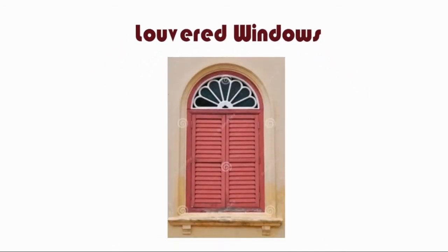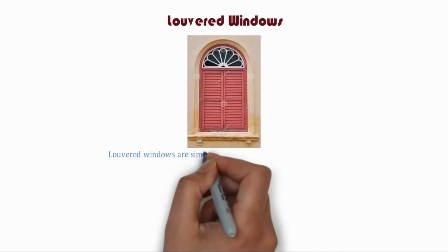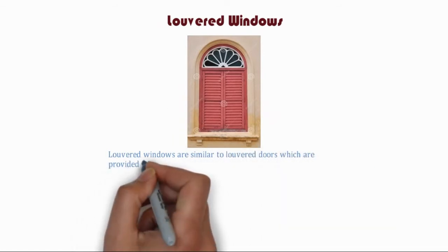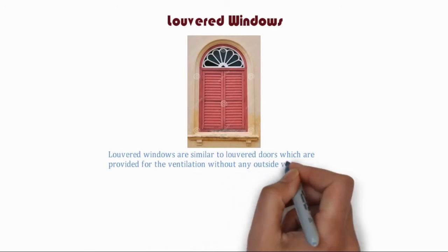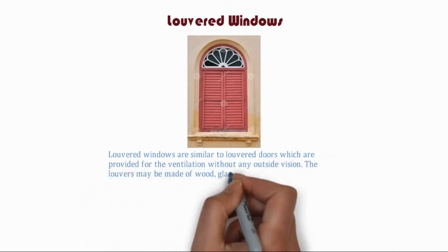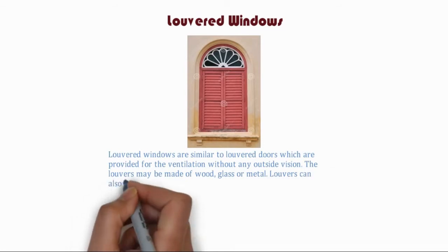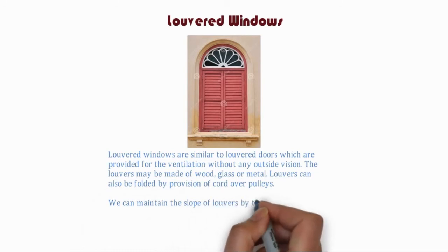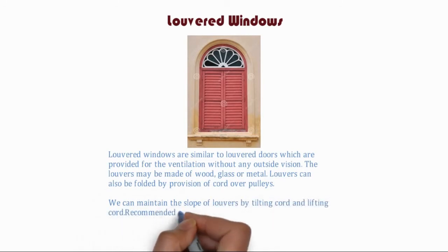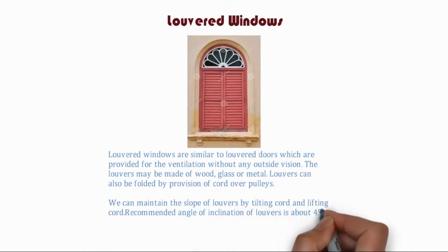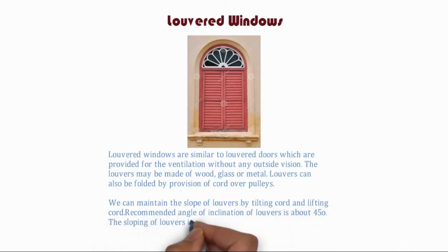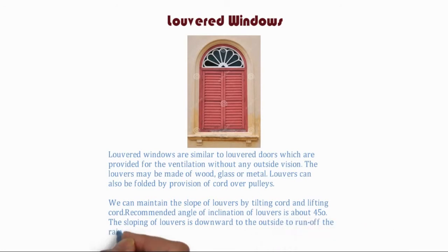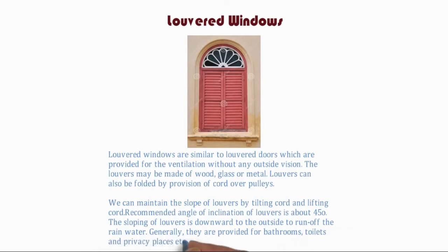Louvered windows are similar to louvered doors, which are provided for ventilation without any outside vision. The louvers may be made of wood, glass, or metal. Louvers can also be folded by provision of a cord over pulleys. We can maintain the slope of louvers by tilting cord and lifting cord. The recommended angle of inclination of louvers is about 45 degrees. The sloping of louvers is downward to the outside to run off rainwater. Generally, they are provided for bathrooms, toilets, and privacy places.